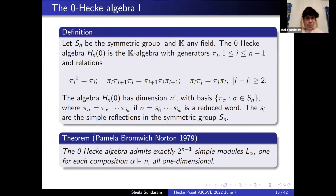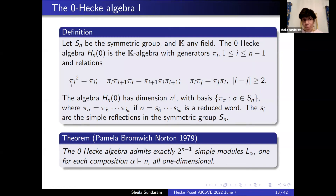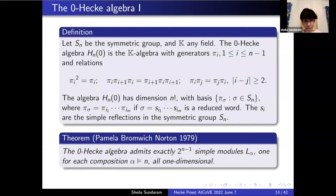The zero Hecke algebra can be thought of as a deformation of the group algebra of the symmetric group. You have the braid relations, but instead of simple reflections being involutions we have pi_i^2 = pi_i — they're idempotents. It has dimension n factorial and a basis indexed by permutations of S_n, where pi_{sigma} = pi_{i_1} through pi_{i_m} for a reduced word expression for sigma.